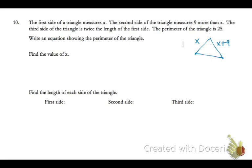is 9 more than that. So we'll just add 9 to x. And then the third side is twice the length of the first. So in math, if we want to do twice something, we simply multiply. And x is the length of the first. So perimeter means if we add up those lengths, then that measurement is the perimeter, and we're told that that's 25.